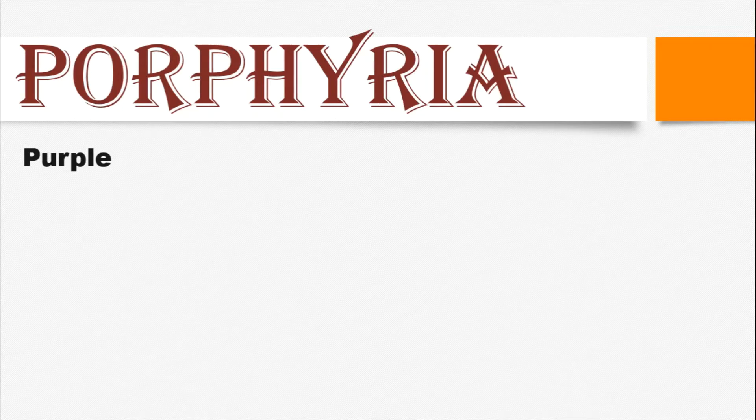The word 'porphyria' was coined from the Greek word 'porphyra,' meaning purple, because at the time of discovery scientists thought that the urine color of porphyria patients was purple. Though it is not exactly purple — it's actually a deep brownish color. In subsequent lectures, we will also show slides of the urine color of porphyria patients.